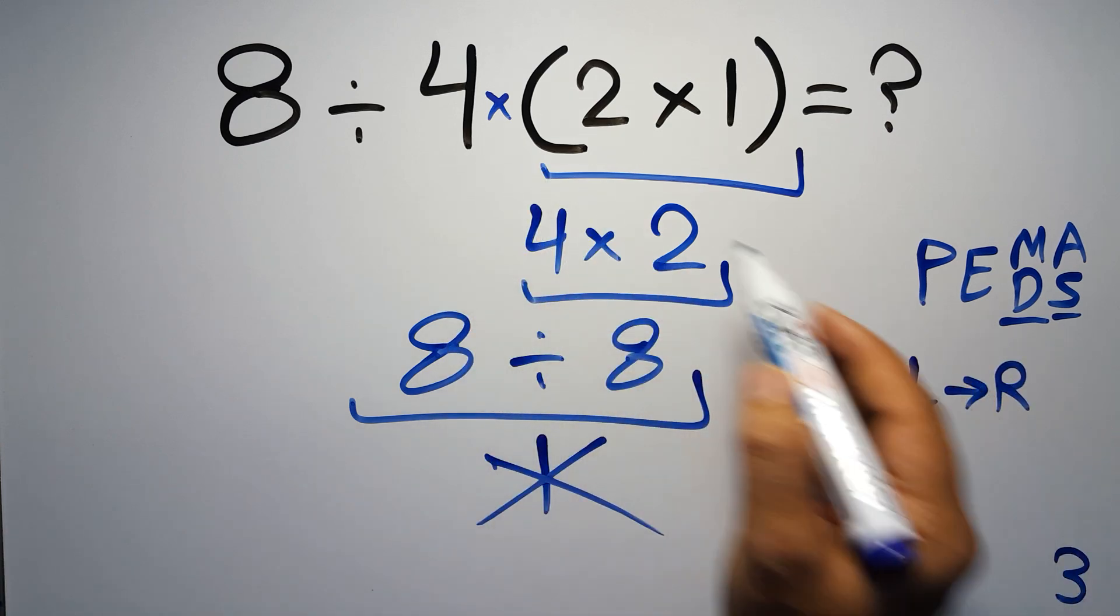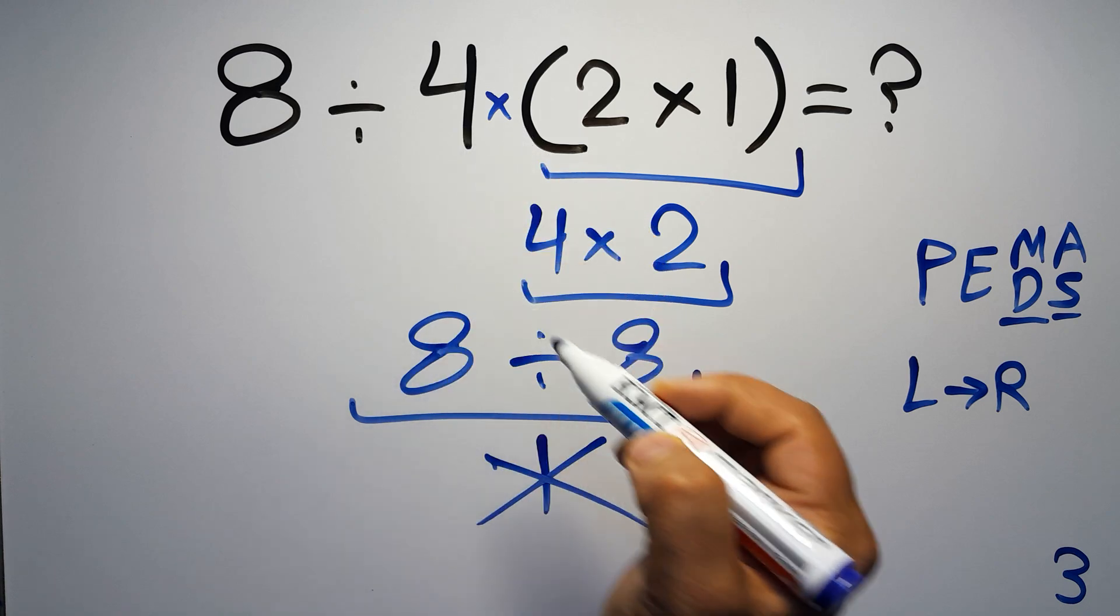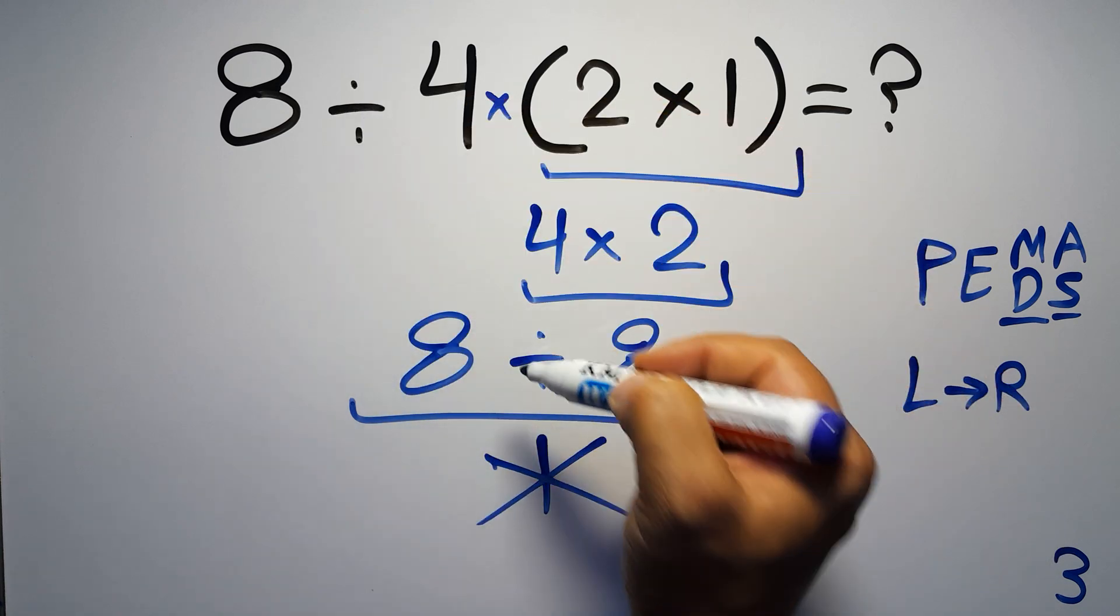So according to the PEMDAS, first we have to do these parentheses, then this division, and finally this multiplication. If we do this multiplication before this division, it is wrong.